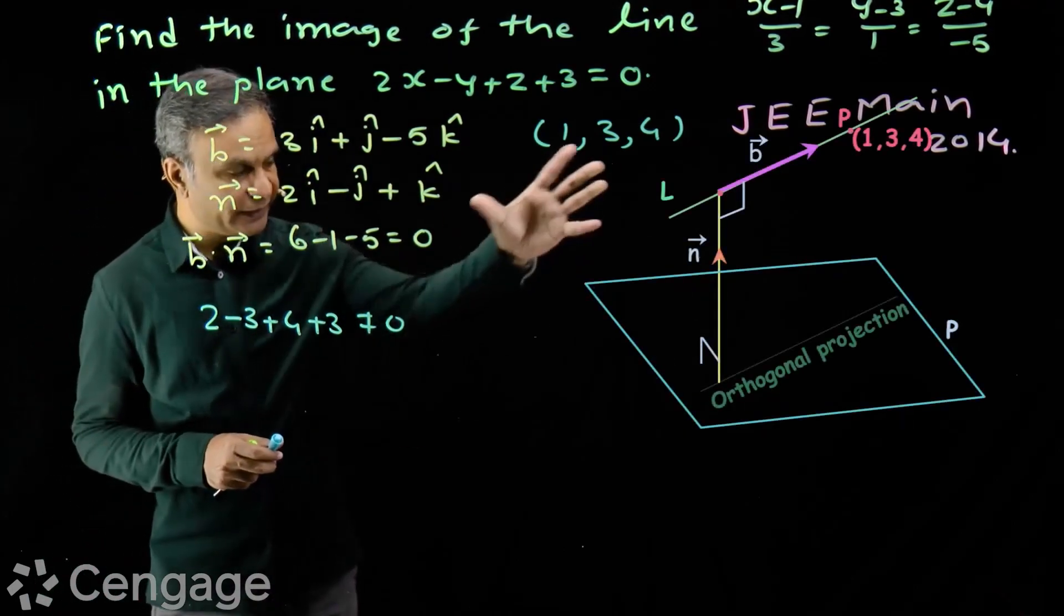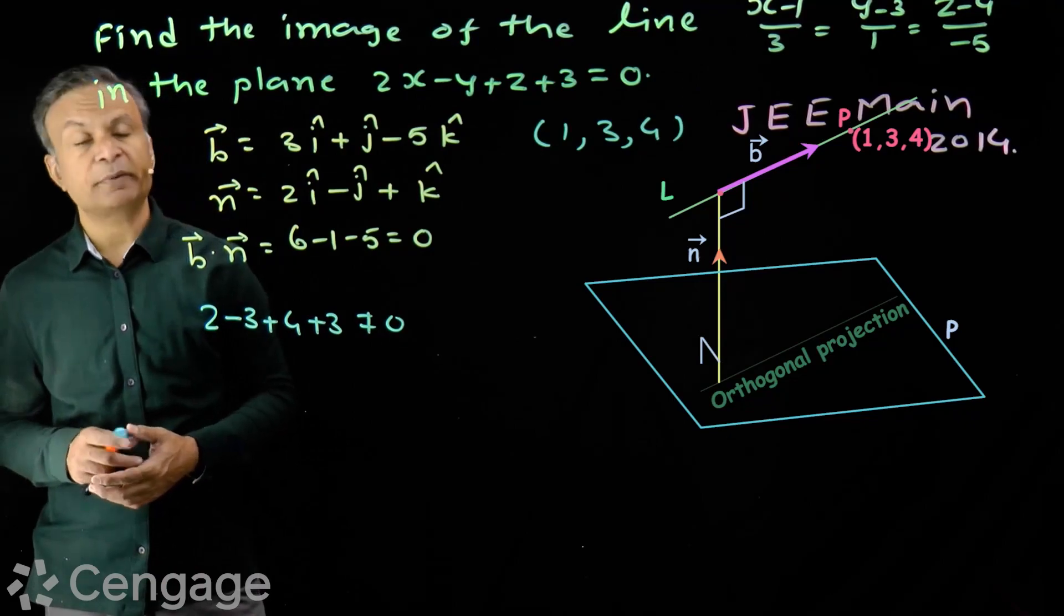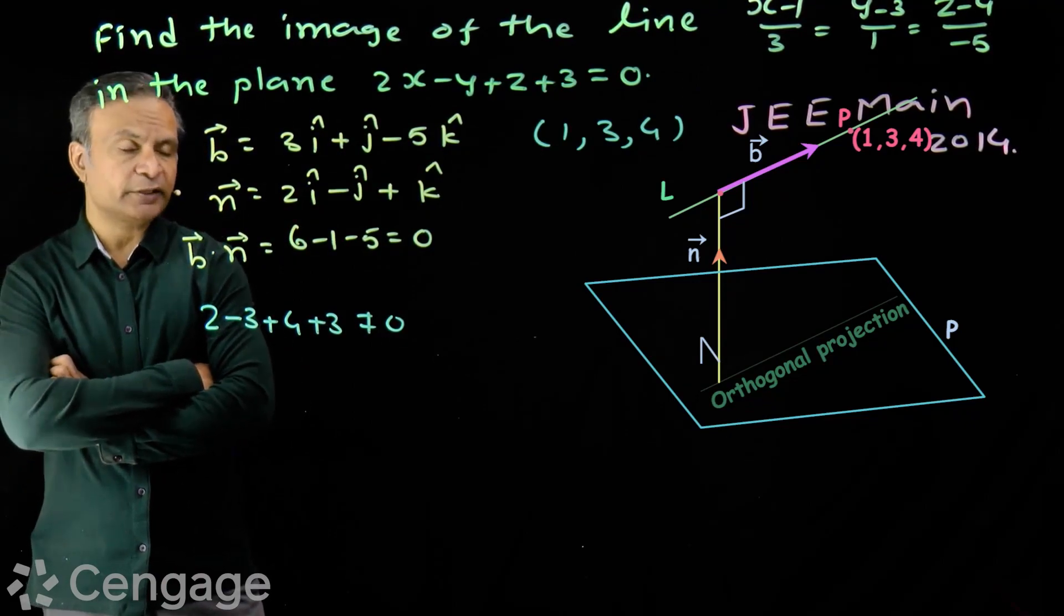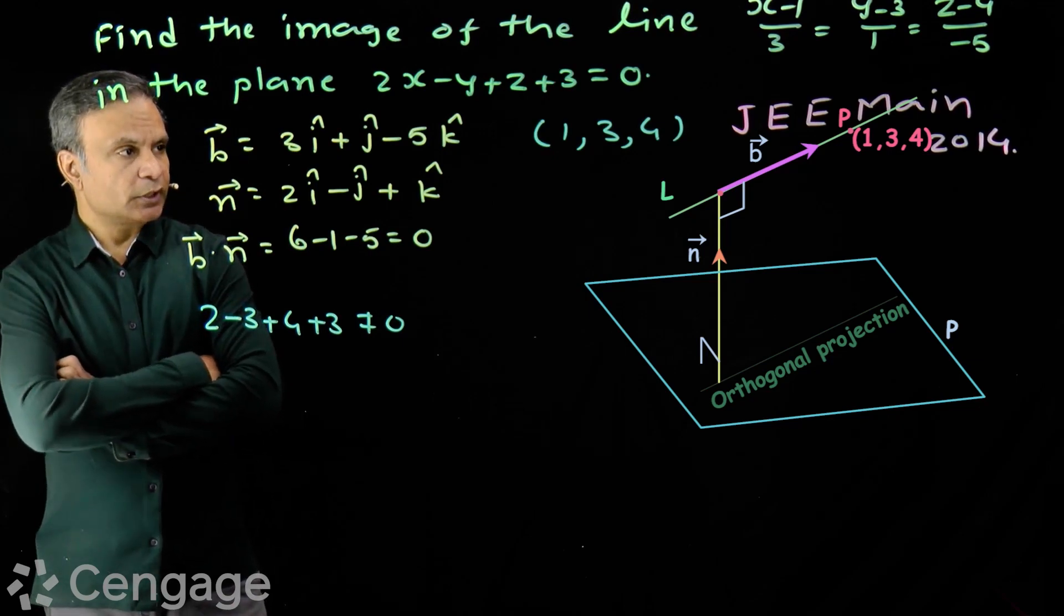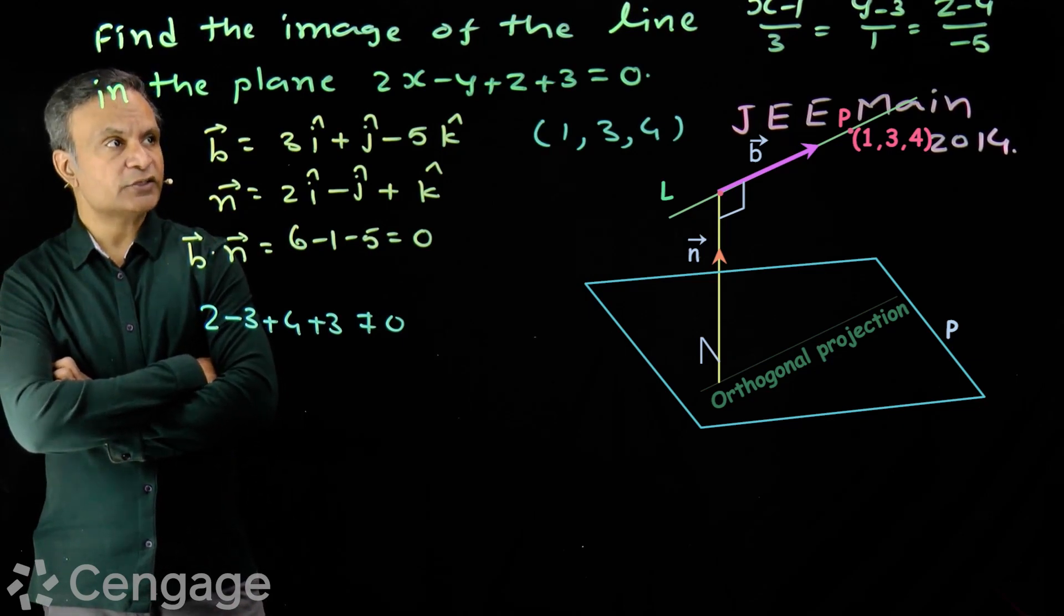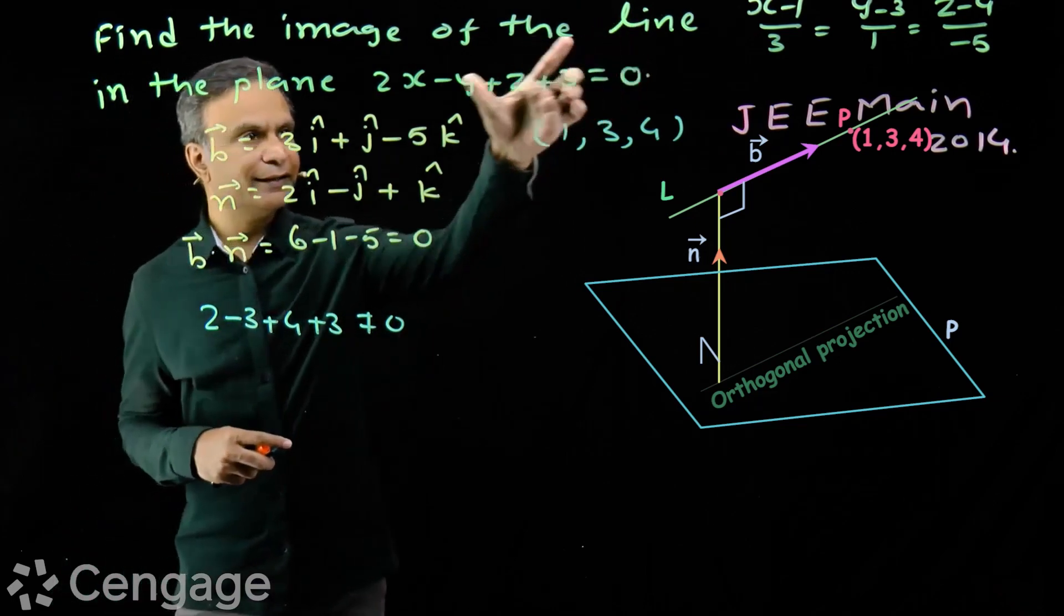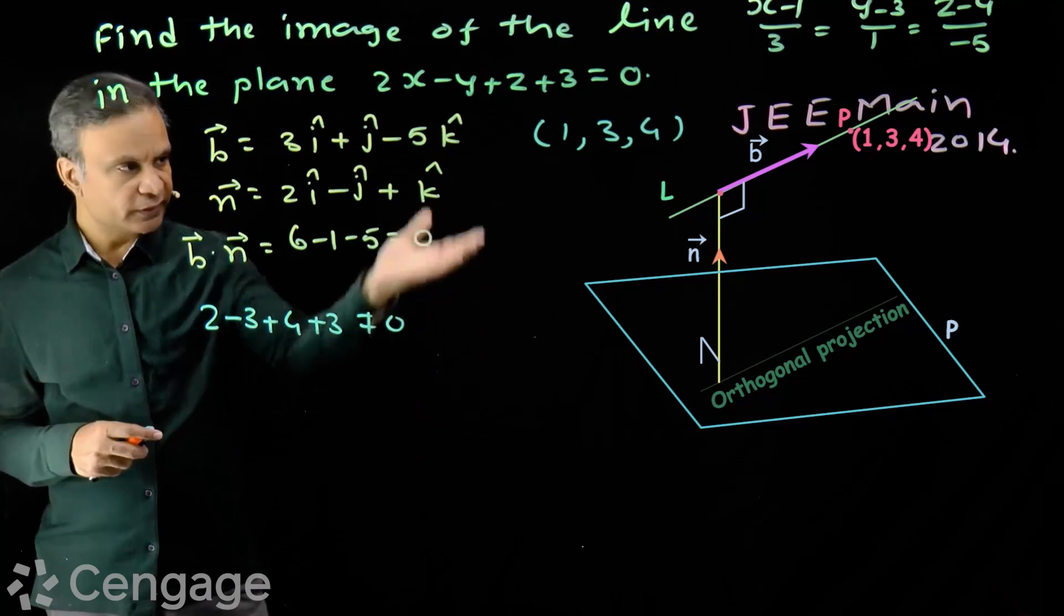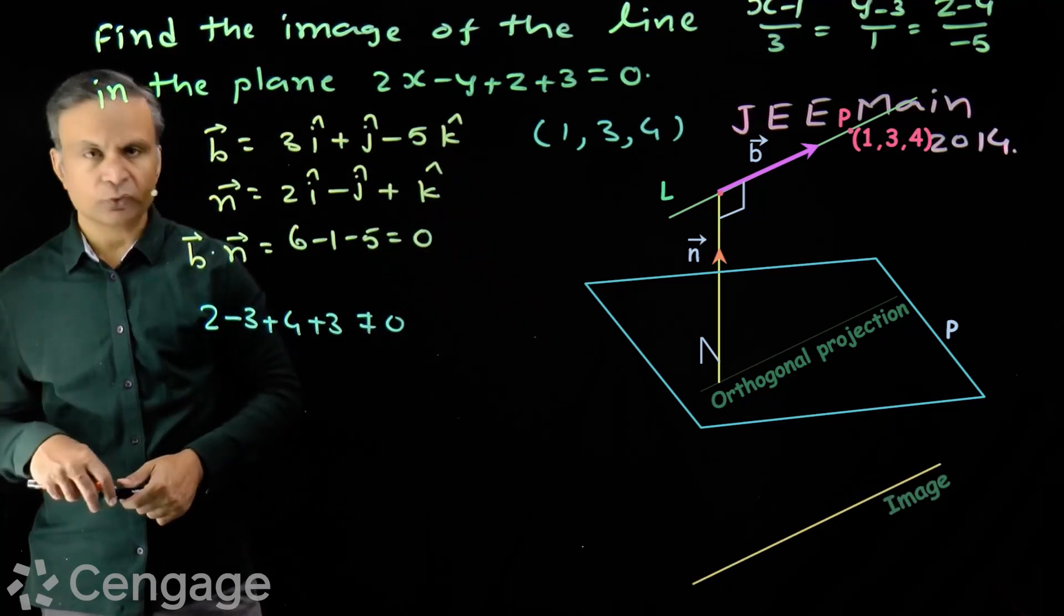So here we have plane and line, where line is parallel to the plane. Pehle hum positions check karenge land and plane ke. Now we have to find equation of image of this line in this plane. Is plane mein is line ka image nikalna hai. Image will be here. Yahaan pe hoga image.